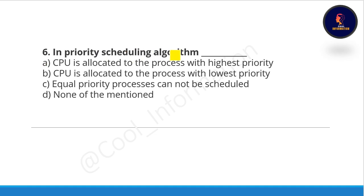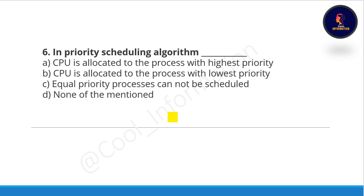Question six: in priority scheduling algorithm, CPU is allocated to the process with the highest priority, or CPU is allocated to the process with the lowest priority, option C is equal priority processes cannot be scheduled, and option D is none of the mentioned. The correct option is option A: CPU is allocated to the process with the highest priority.